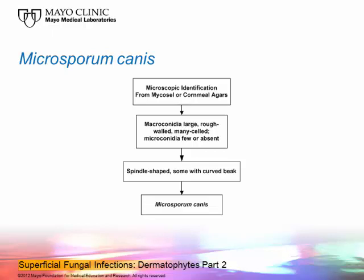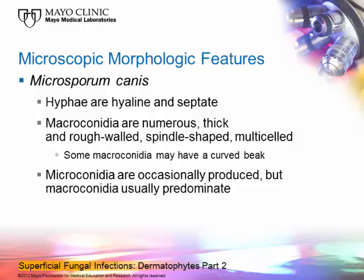The macroconidia of Microsporum canis are spindle-shaped. If you look at the distal tip — the tip where they're not attached — you'll notice that it actually curves. Sometimes you'll see some rough projections on that part. It has a curved beak, and that is what we use for recognizing Microsporum canis. This is one of the easiest ones to recognize. The hyphae are hyaline and septate, and the macroconidia are rough-walled, spindle-shaped, multicellular, with a curved beak.